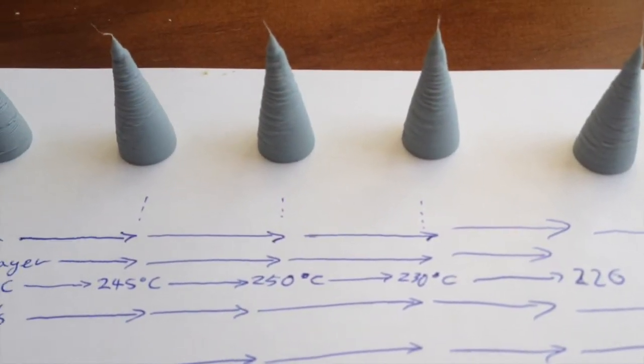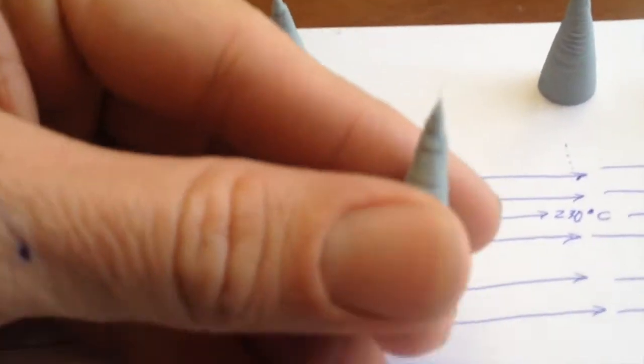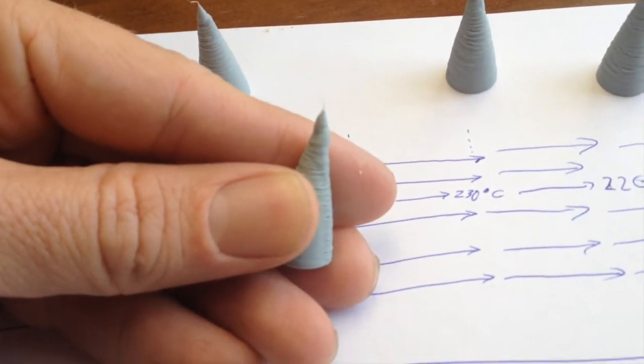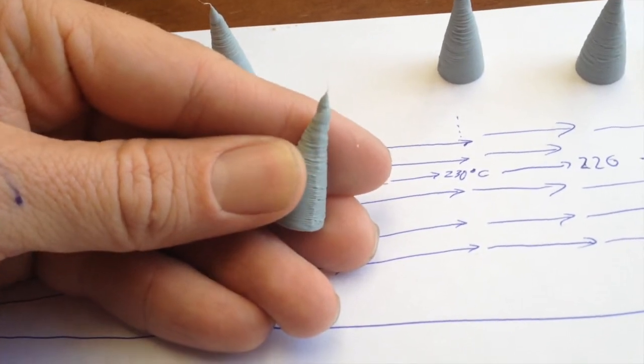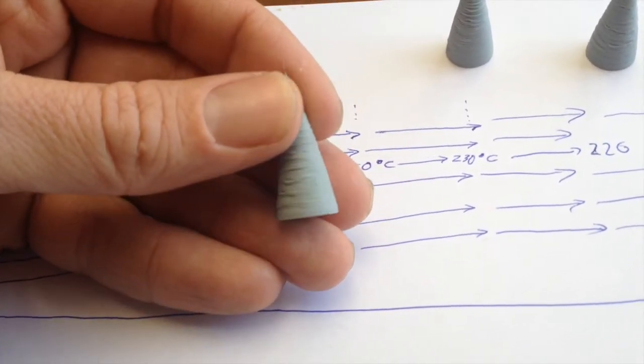Kept on going, kept on going through to 250. And you can see there, again, point's not too bad, but still a lot of distortion. And again, there's that smooth side on one side.